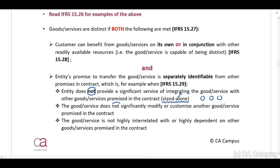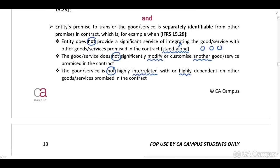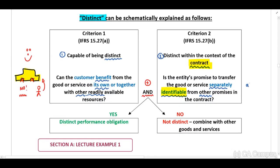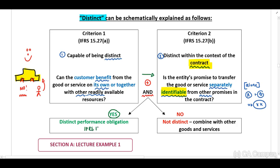Additionally, the good or service does not significantly modify or customize another good or service, and it is not highly interrelated or highly dependent on other goods or services. In other words, this good or service should be able to stand alone — the entity does not have to provide A plus B plus C to make one product. If the first question (capable of being distinct) is yes, you must ask the second. If distinct within the context of the contract is also yes, this is a distinct performance obligation and we apply IFRS 15. If no, it is not distinct and we combine it with other goods or services.